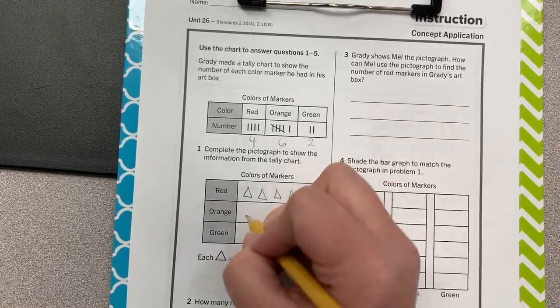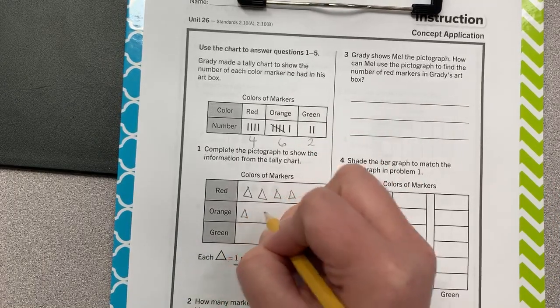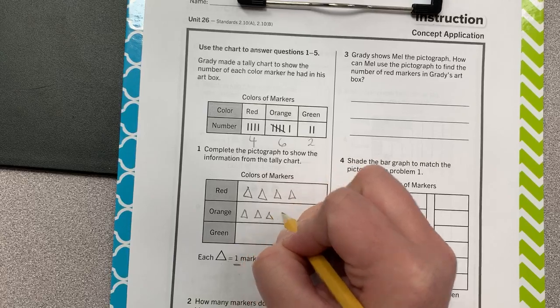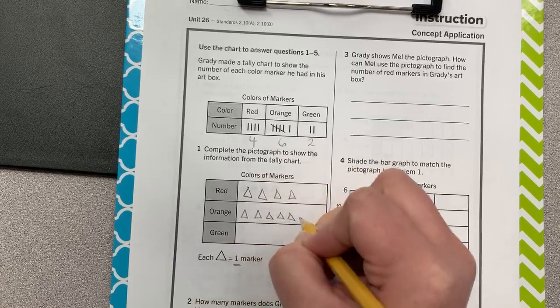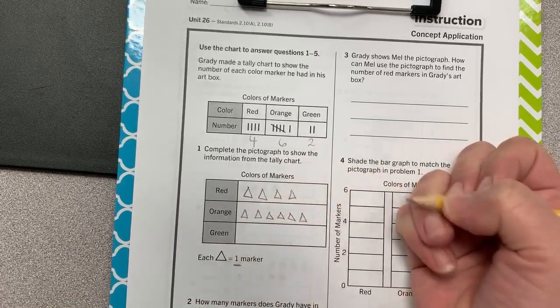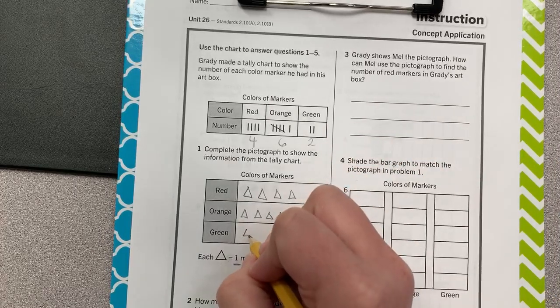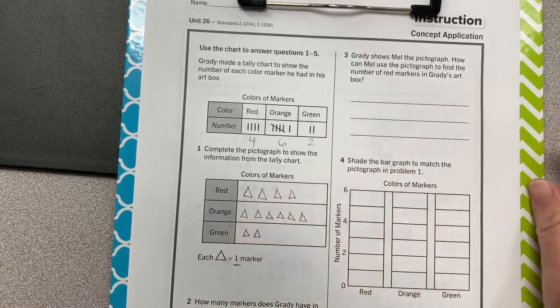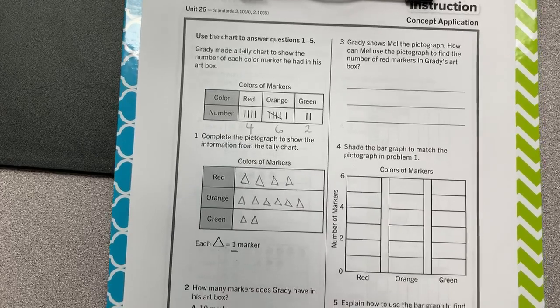For orange, we need six. One, two, three, four, five, six. And for green, we need two. One, two. Okay, there's our pictograph.